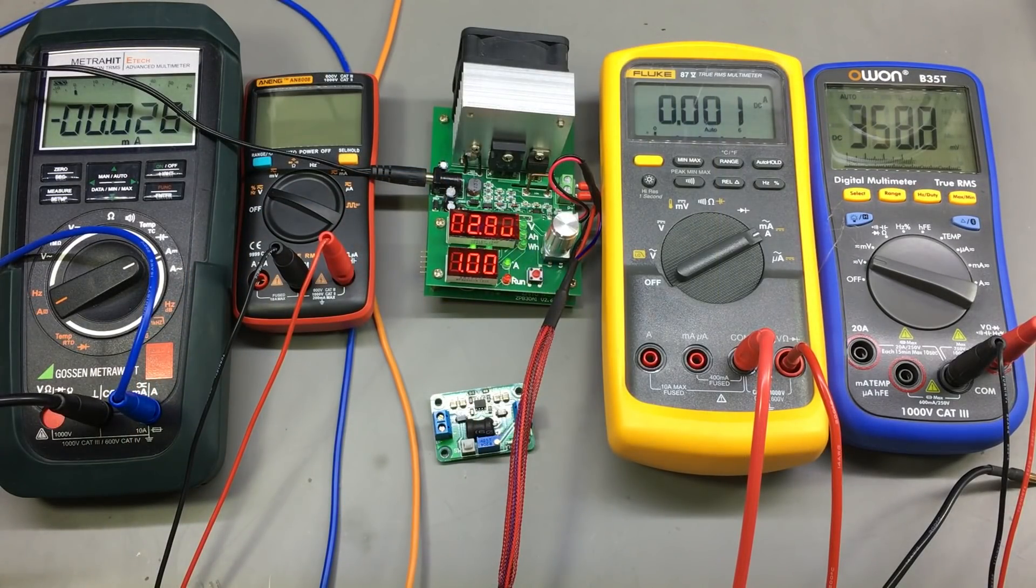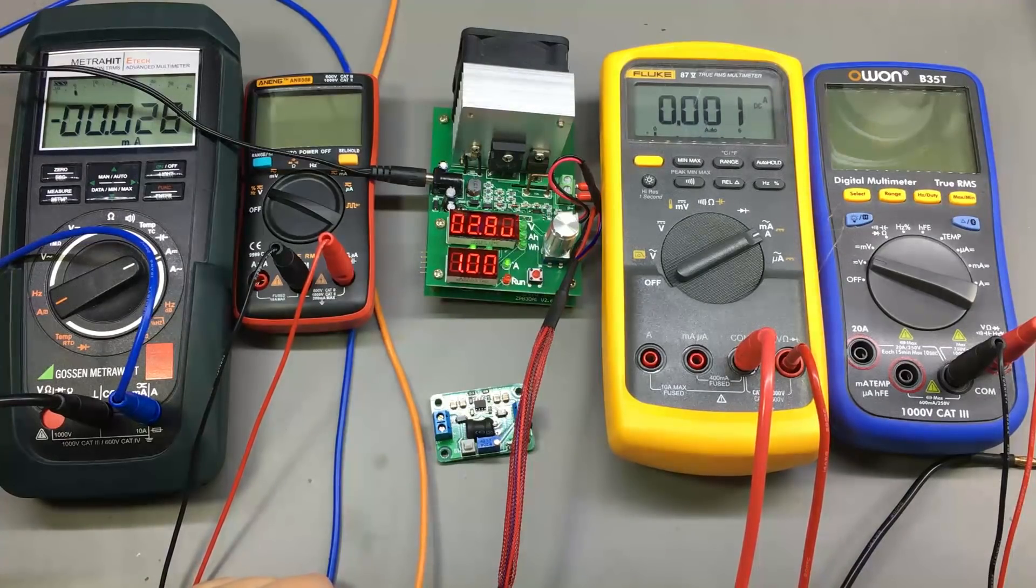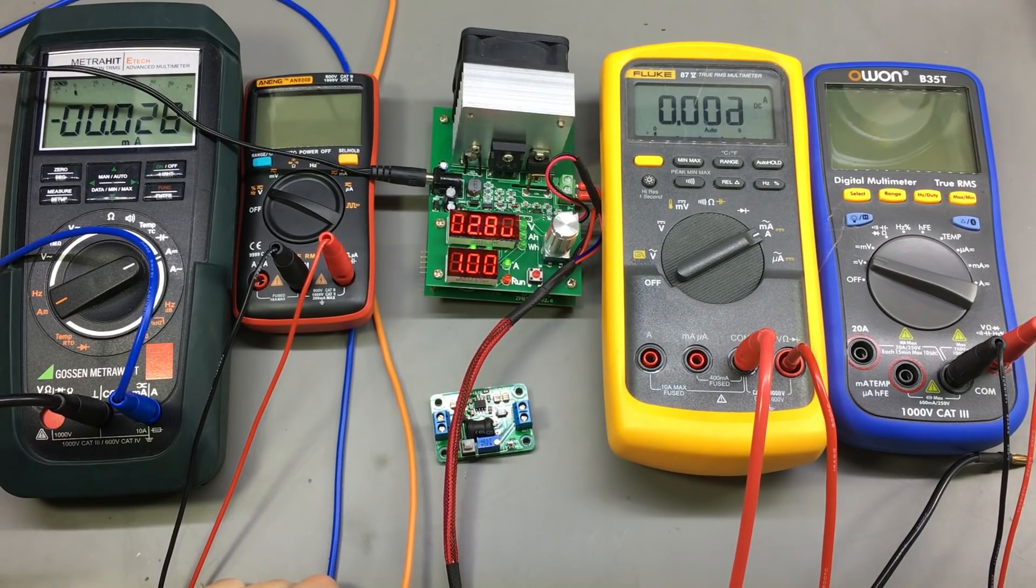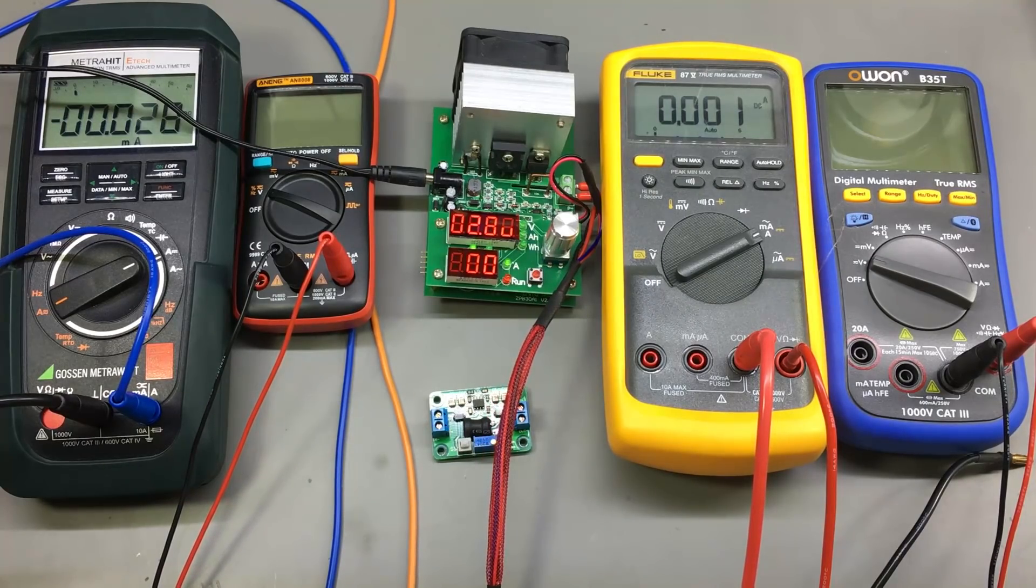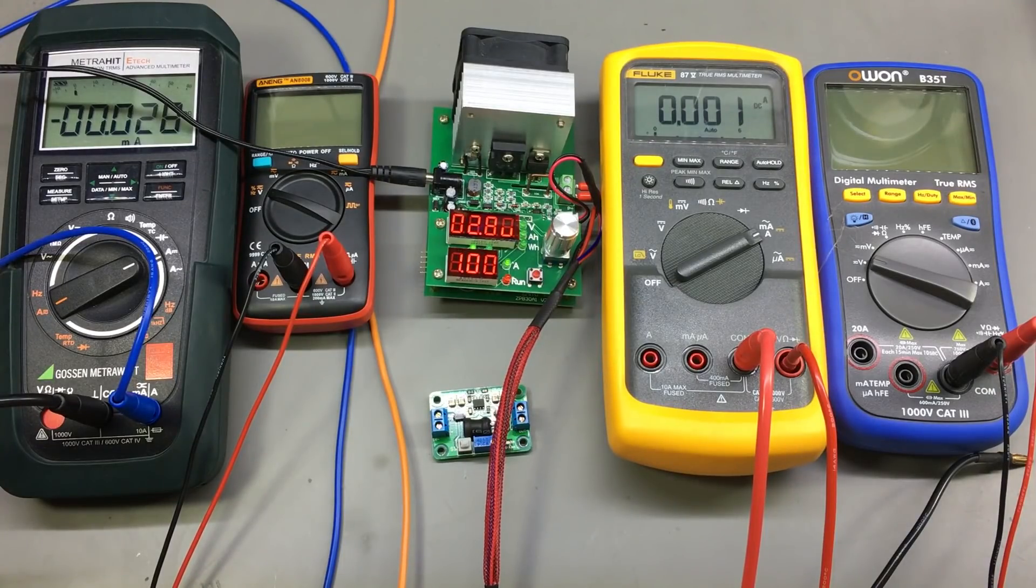Now let's actually measure the efficiency of this circuit. To do that, we need to know the power that goes in and the power that comes out. We can then divide the output power by the input power and we get the efficiency of the circuit. To create that graph that you've seen in the datasheet, we need to repeat this measurement in different steps for different output currents. To do these measurements, you can use whatever you have available.